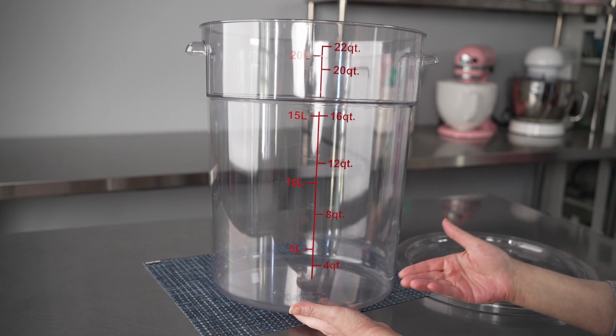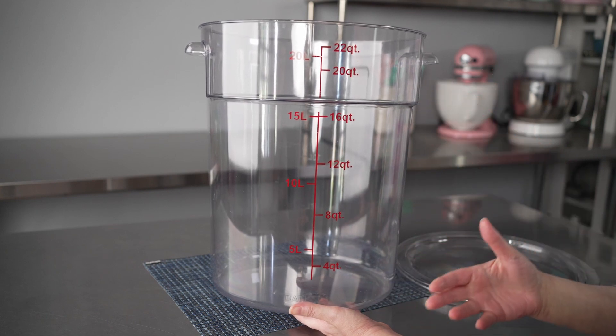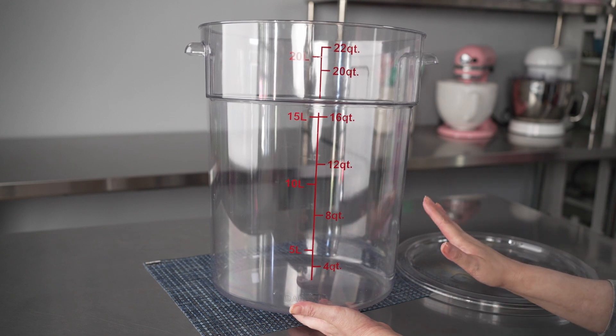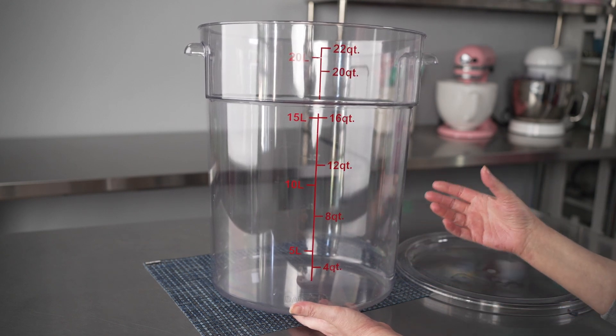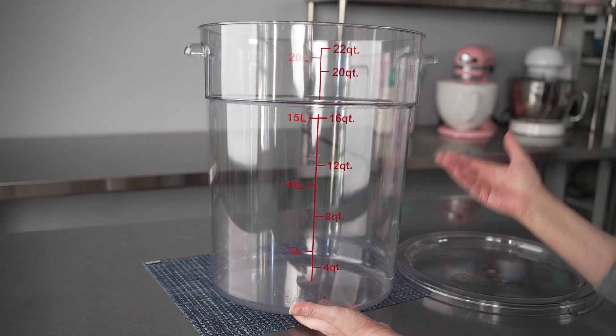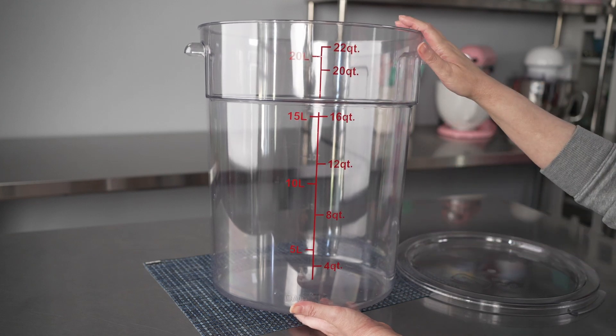You can also portion ingredients out if you're doing large-scale recipes, and also store ingredients. We particularly like these for the storage of our dry goods that we keep in medium-level quantities for what we do.